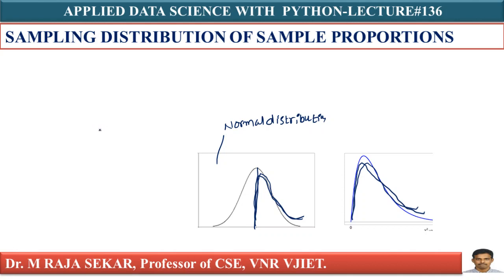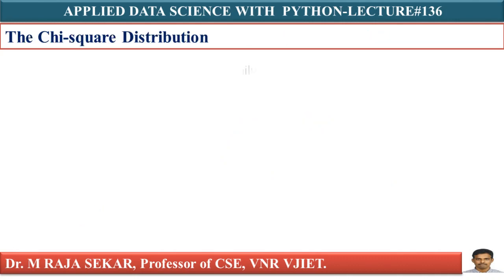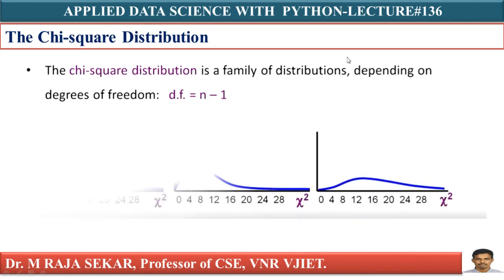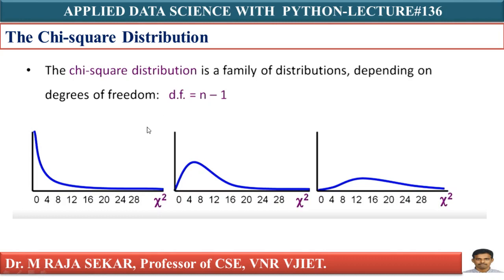The chi-square distribution is a family of distributions depending on degrees of freedom, with degrees of freedom formula n−1. When the degrees of freedom is increasing, the chi-square distribution will follow normal distribution — it becomes similar to normal distribution. From the population you take samples, find the variance, plot them, and you get chi-square distribution; as sample size increases, it approaches normal distribution.